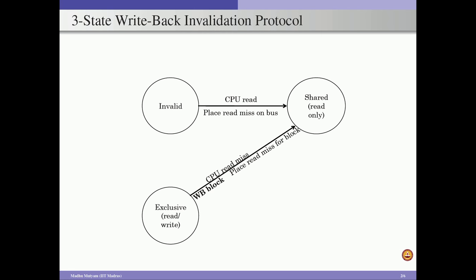In the third scenario, core 4 has a read miss and the cache replacement policy identifies a victim block in a location whose state is shared. When the victim block is in the shared state, we do not change the state of that location — we retain the state as it is. Similar to all other transitions, we still place a read miss transaction on the bus. Effectively in this three-state protocol, for each of the three states when there is a CPU read miss, we place a read miss transaction on the bus.